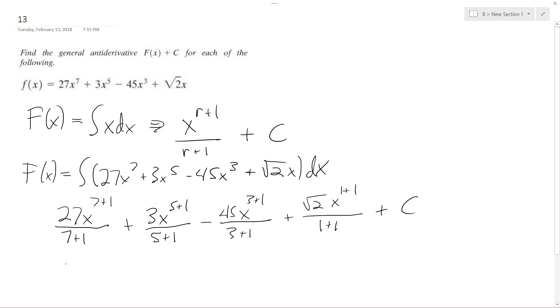Finishing this up. So we end up with 27 over 8 X to the 8th, plus this is 6 here but it reduces, so we get X to the 6th over 2, minus this becomes 4, so we get 45X to the 4th over 4, plus square root of 2 over 2 X squared, plus C.